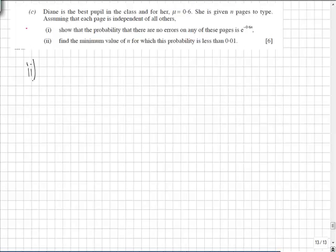In part 2, we have to find the minimum value of n for which this probability is less than 0.01. In part 1, we found the probability that there were no errors on n pages. Here's e^(-0.6n), and this has to be less than 0.01.